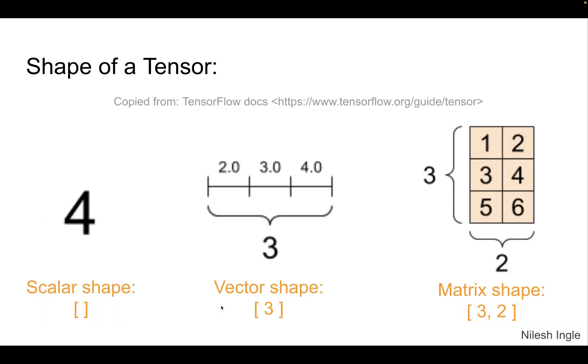And here, if we look at now the shape of the tensors, four, which is just a number, it has a scalar shape of zero. So there's nothing in the square brackets. In this second case, this is a vector, which has three values, 2.0, 3.0 and 4.0. And therefore, this is a vector shape. And it has a size three.